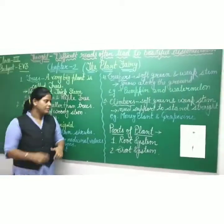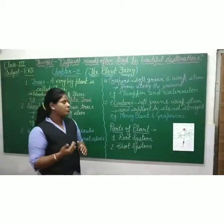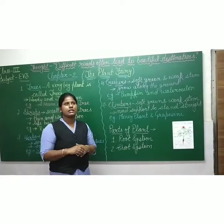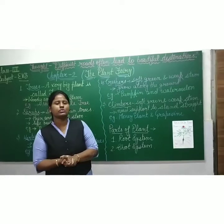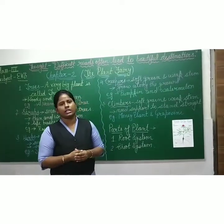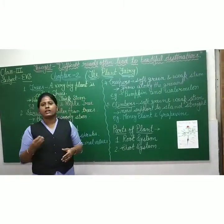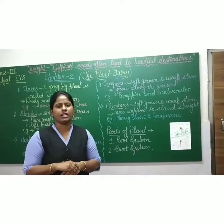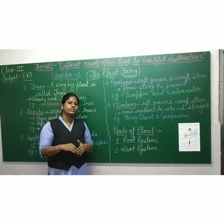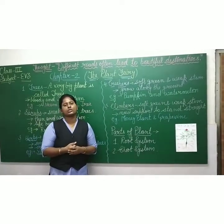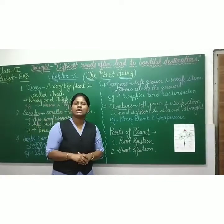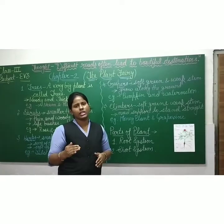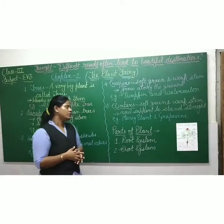Plants also grow according to the place they live in. First, terrestrial plants — these grow on land only, for example mango tree, lime tree, and orange tree. Some plants grow in water — these are called aquatic plants.